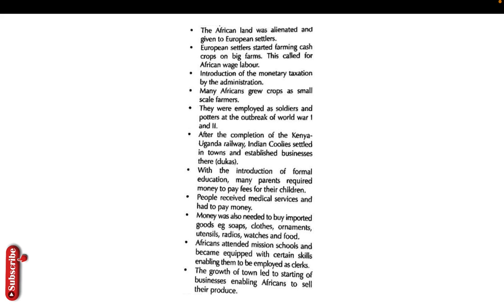Because European settlers were growing cash crops, there was a need for African wage labor — Africans were the ones supposed to work on the plantations. Because Africans needed to work on land belonging to European settlers, they needed to be taxed on the money they were paid, so there was taxation. Africans were also not allowed to grow cash crops; they did only small-scale farming. Most of them lived as squatters on settler farms and did not own their own land.